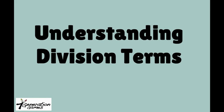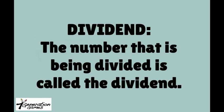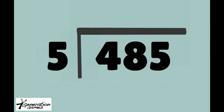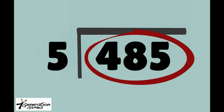Fortunately, we can avoid all of these problems by remembering some basic division terms. Dividend: the number that is being divided is called the dividend. In this problem, 485 is being divided by 5, so 485 is the dividend.